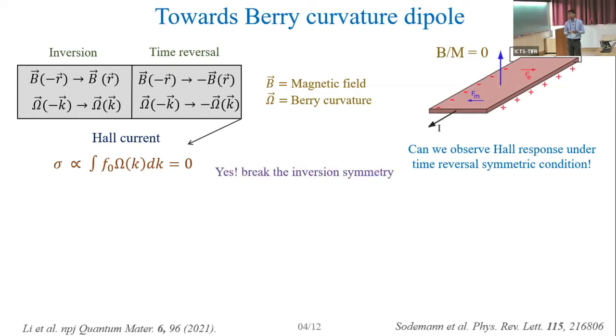Sodemann and others answered this question in a very positive way that yes, we can have Hall effect even in the time reversal symmetric condition. For that first, we need to break the inversion symmetry of the system. Since we are in the time reversal symmetric condition, this is already an odd function. If we do not break the inversion symmetry, it will be simultaneously an even function. An even and odd function simultaneously can only be possible when the function itself is zero. For a non-zero value of Berry curvature, we need to break the inversion symmetry.